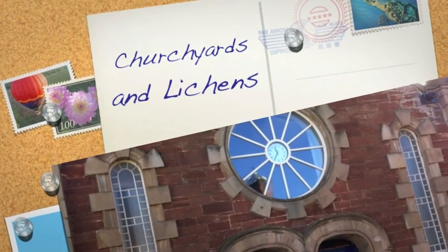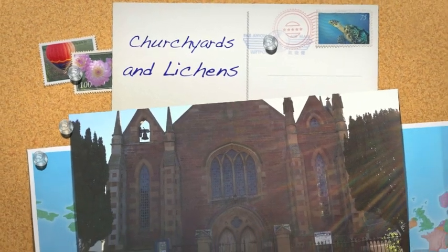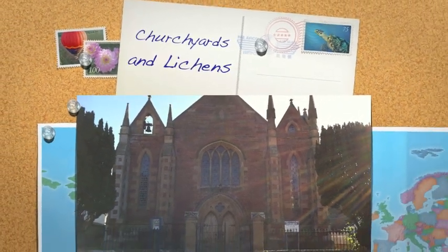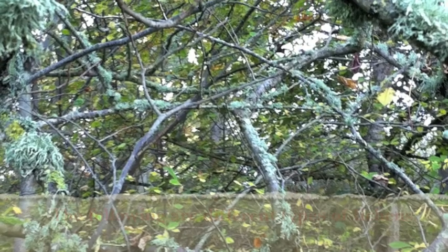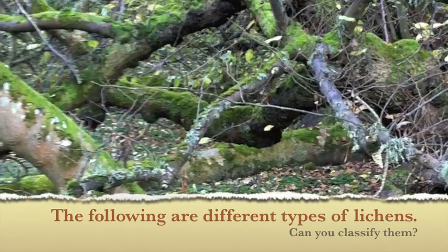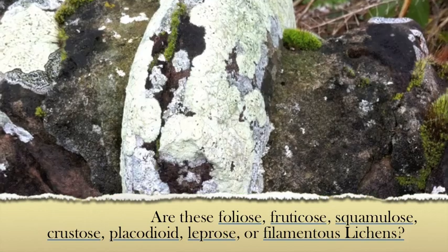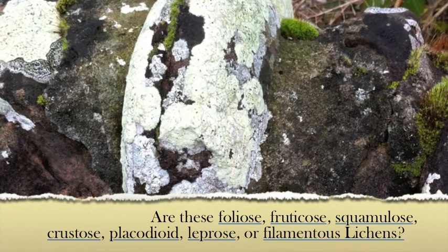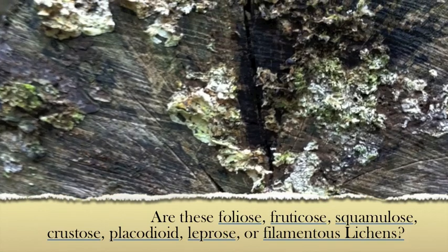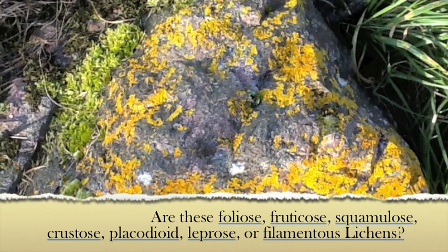Churchyards in unpolluted areas provide extremely important refuges for many lichens. Lichens are not a separate organism in the sense of being one type of individual — it is actually a close partnership between a fungus and an algae. Crustose lichens are spread over and into the surface of their habitat and cannot be removed from the surface without crumbling away.